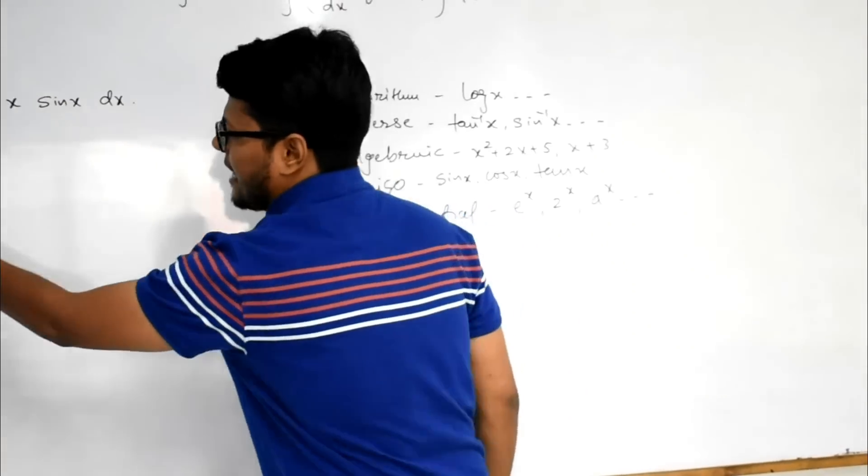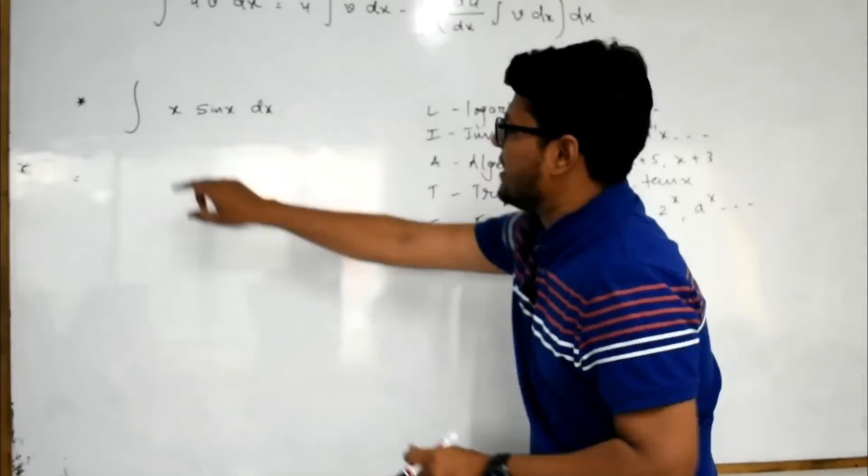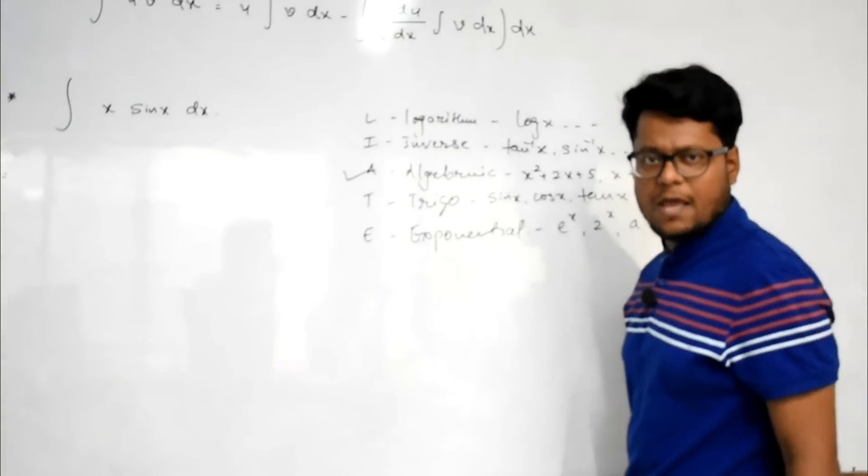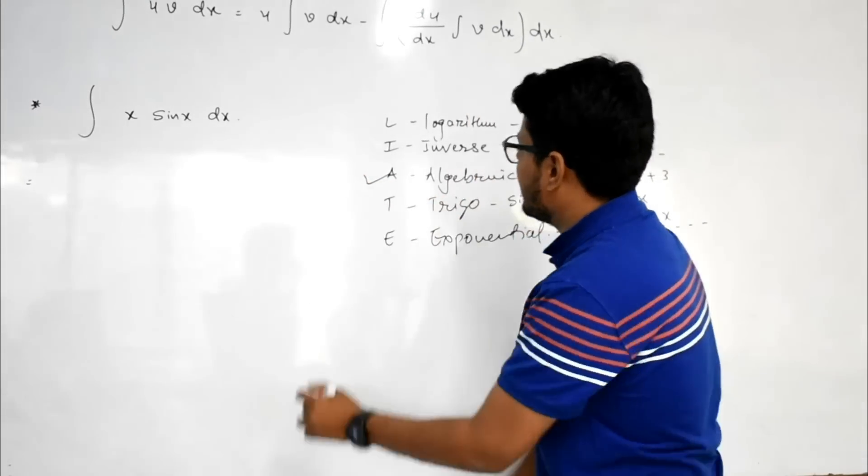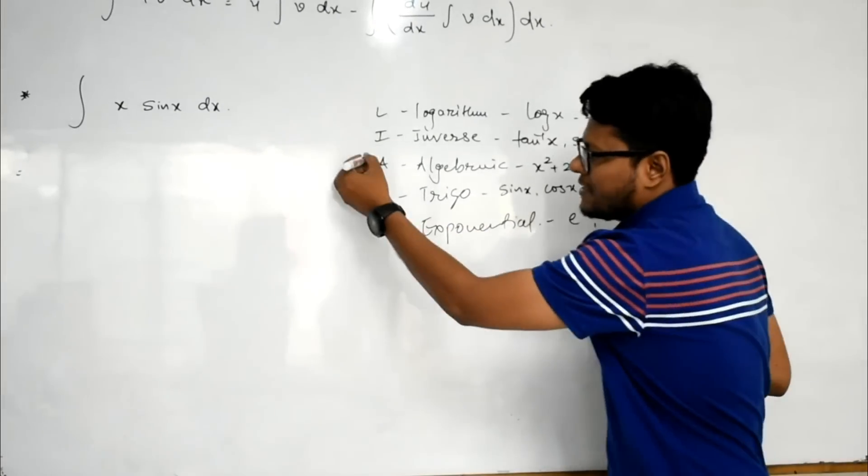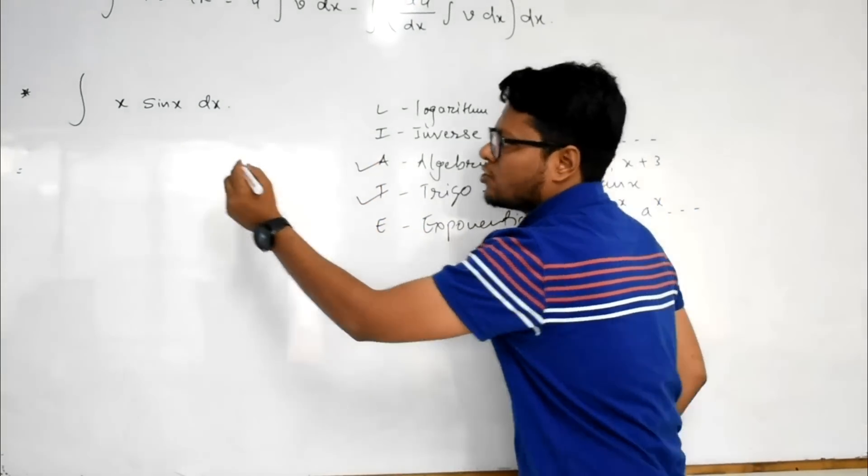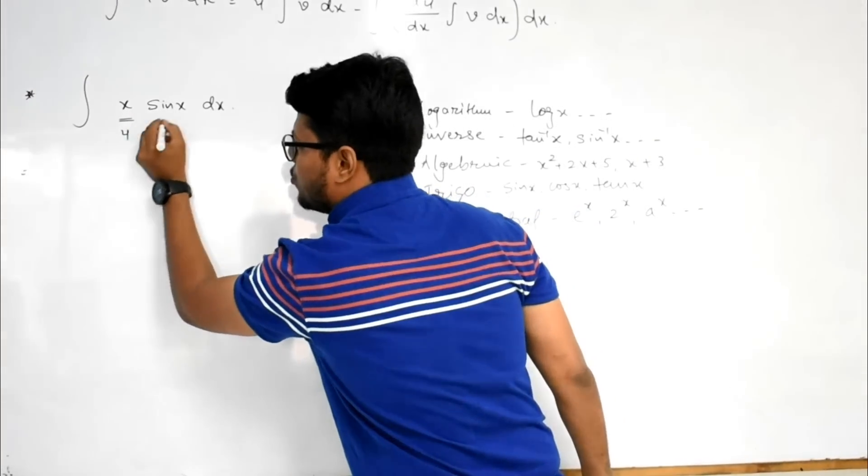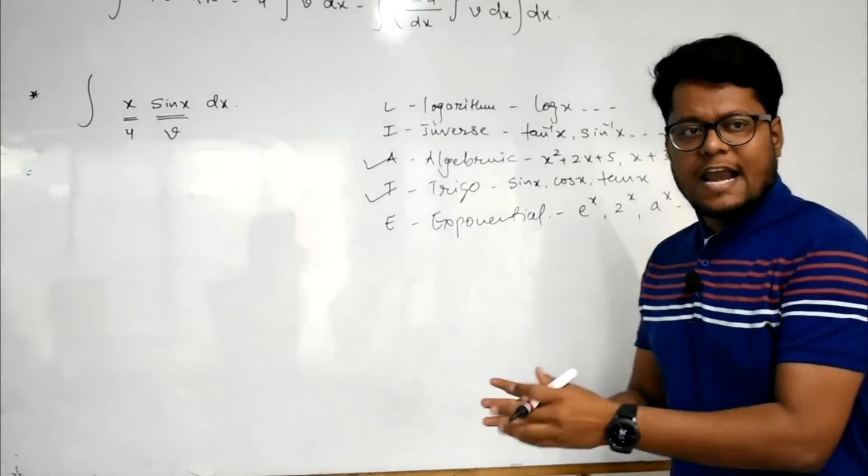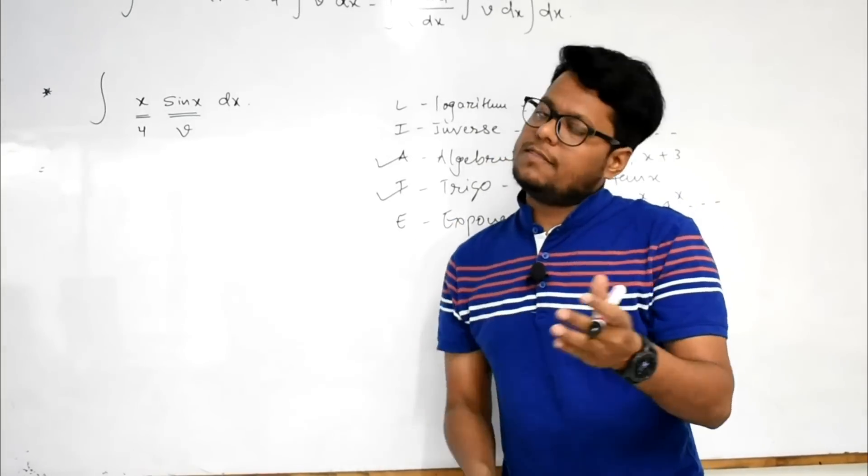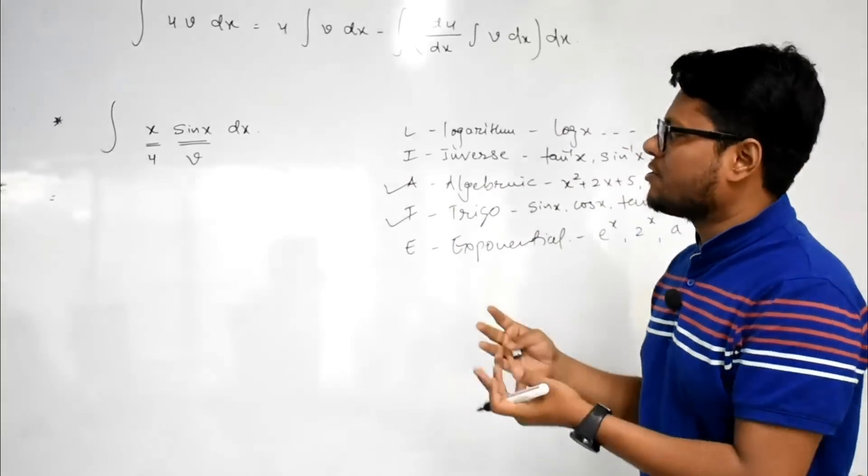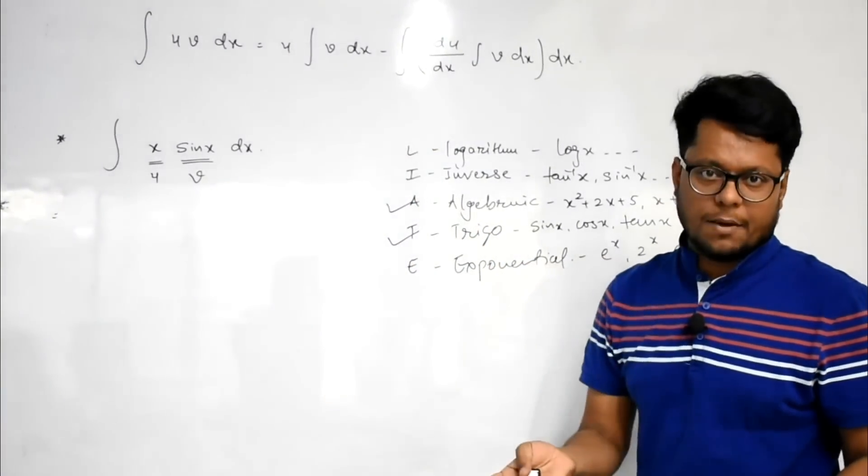Now for this criteria, for this term, the first term is an algebraic term. So we take the algebraic a, and sin x is a trigonometric term, so it is t. First is a and second is t, so this term is considered as u and this term is considered as v. That is an important portion of integration by parts. If we are choosing wrong, then the method is not applicable.